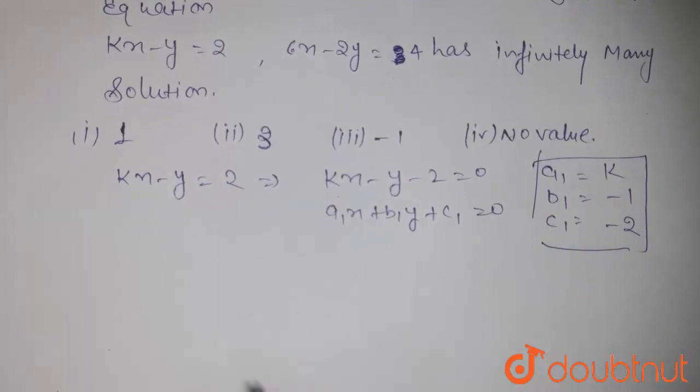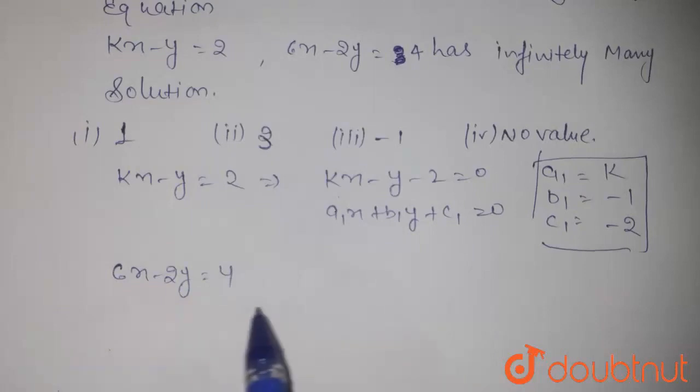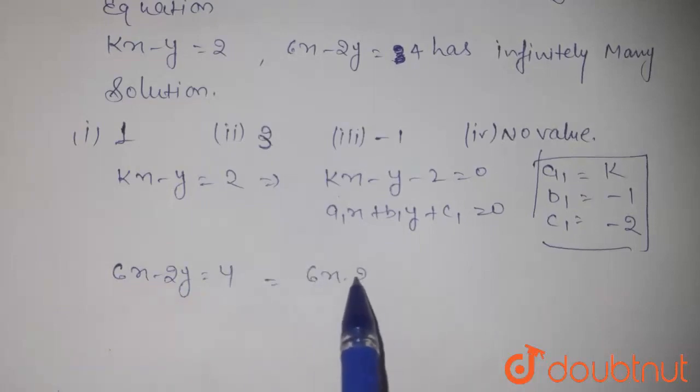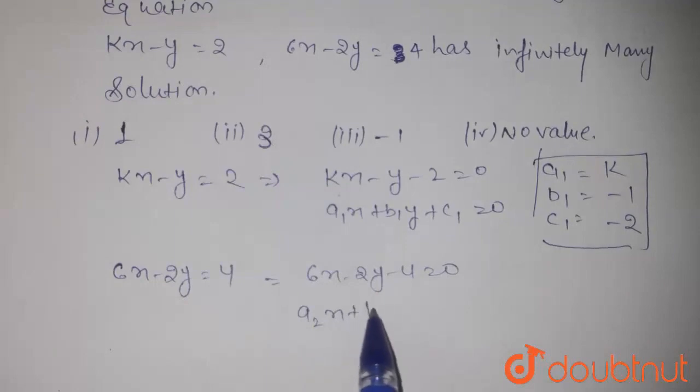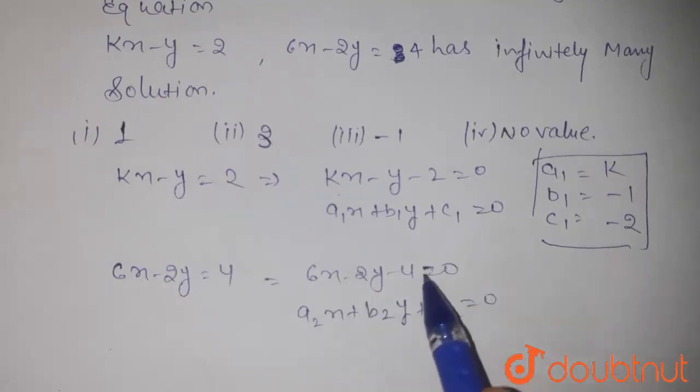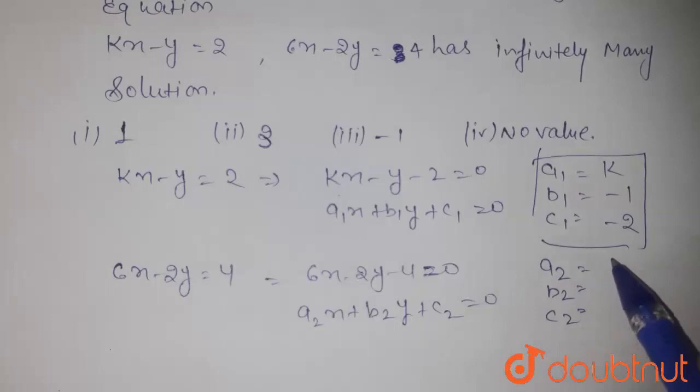Similarly, we solve the second equation 6x minus 2y equals 4. This becomes 6x minus 2y minus 4 equals 0. Comparing with a2x plus b2y plus c2 equals 0, the values of a2, b2, and c2 are 6, minus 2, and minus 4.